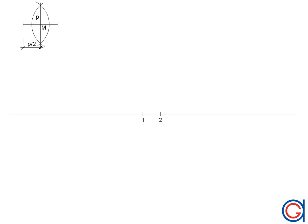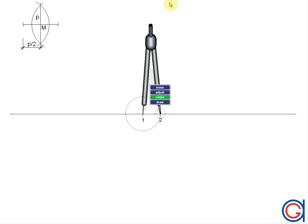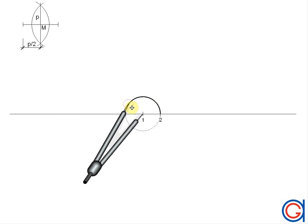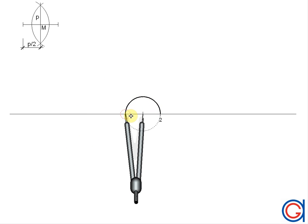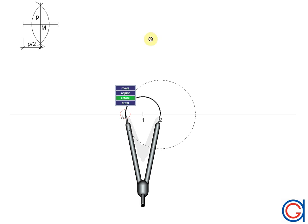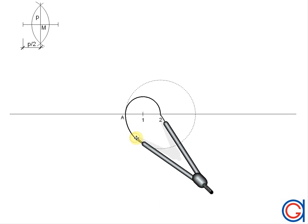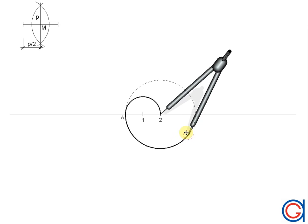Now, finally, we are ready to draw the spiral. With our compass centered on point one and length one-two, we scribe an arc to the left until it cuts the horizontal line at point A. Then, with our compass centered on point two and set to length two-A, we scribe an arc to the right until it cuts the horizontal line again at point B.